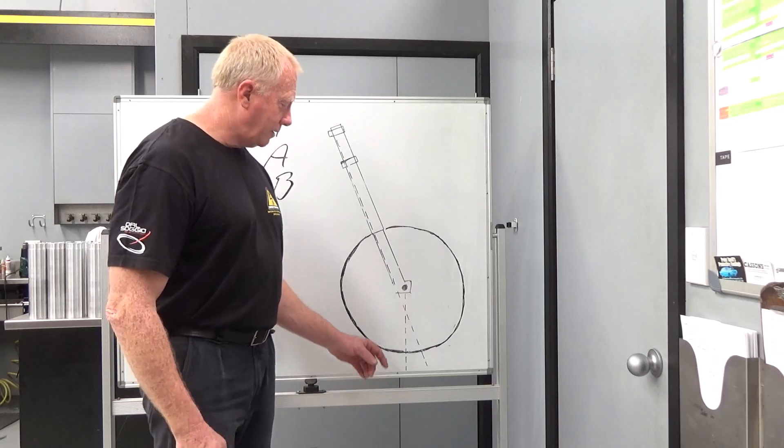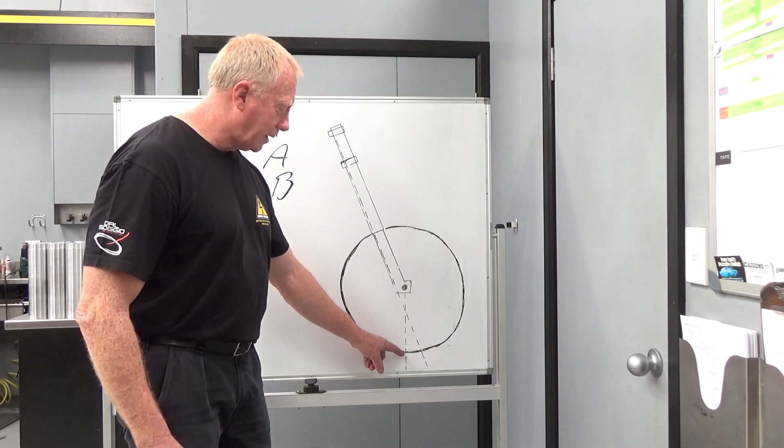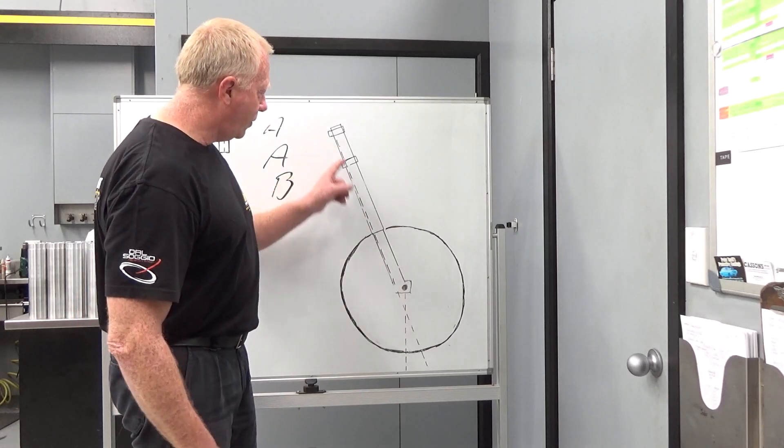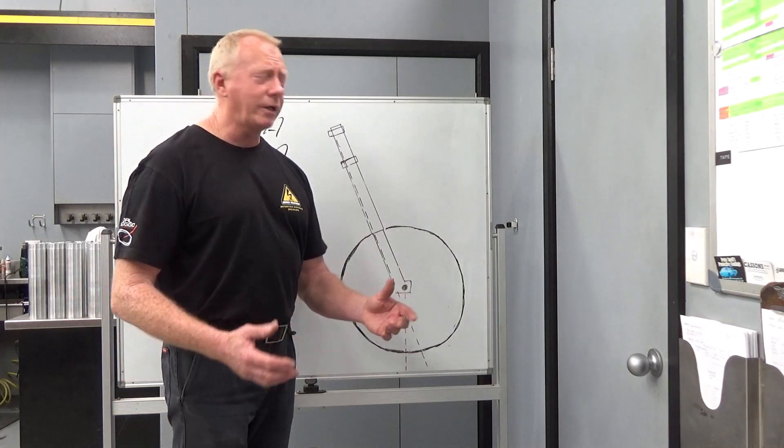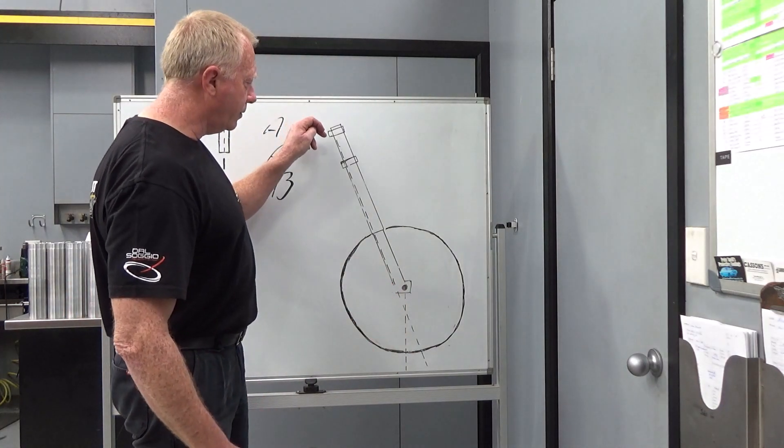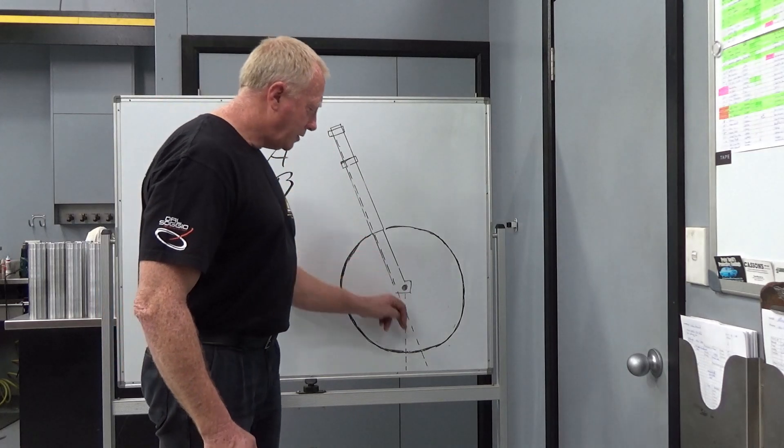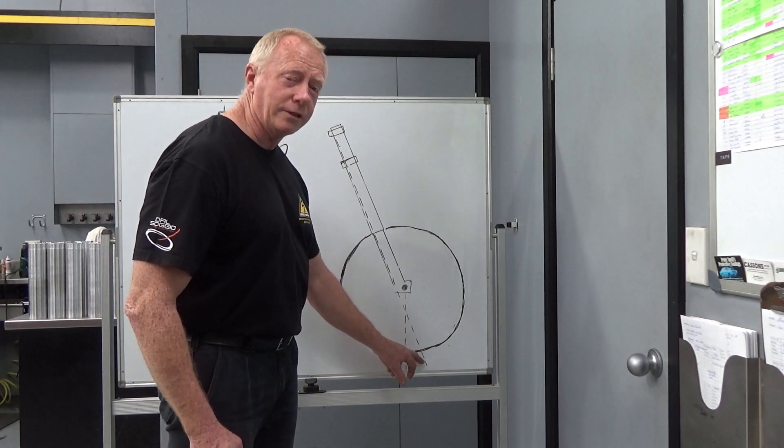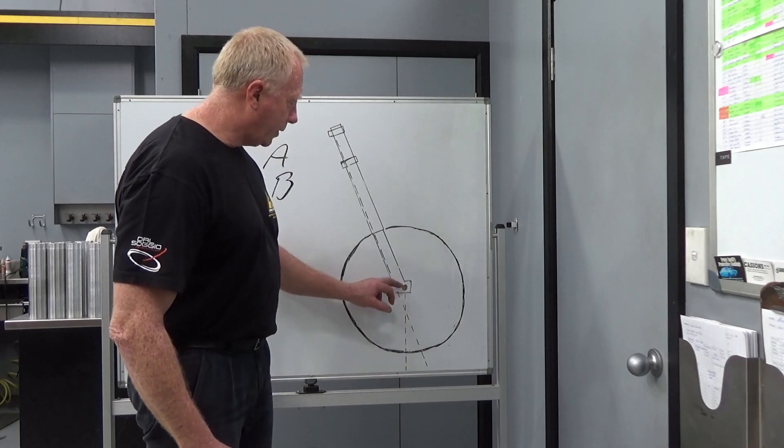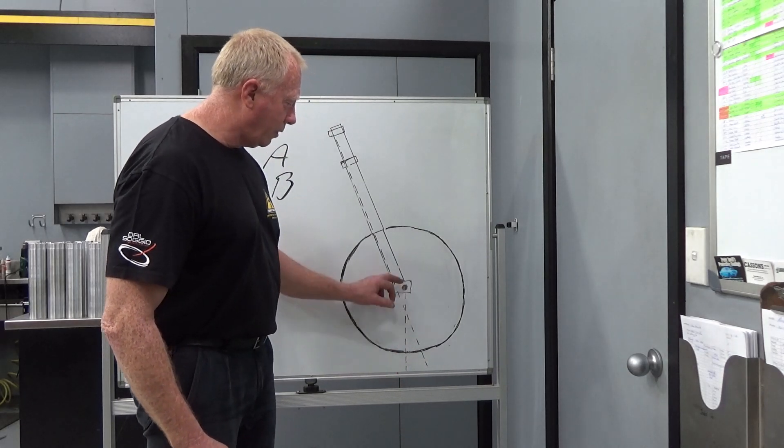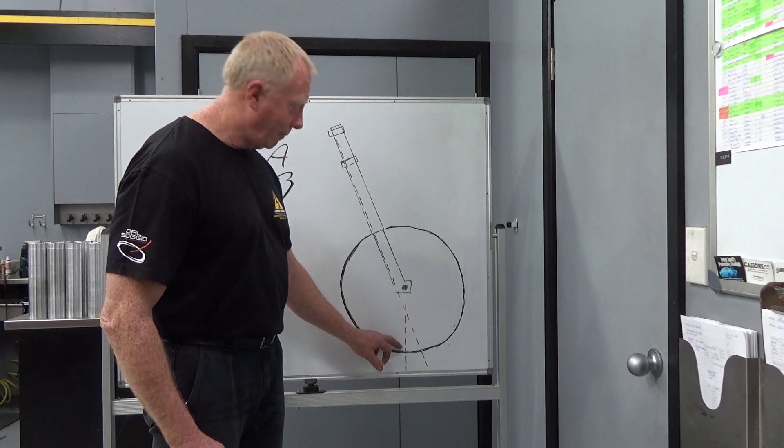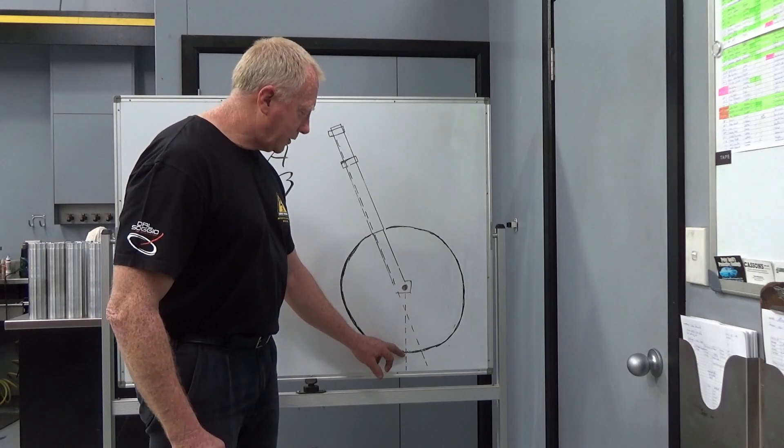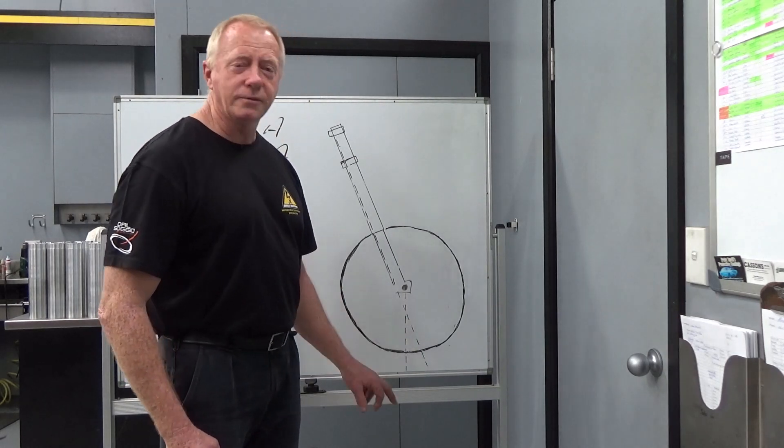Now ground trail is the difference between where the contact patch strikes the ground and where the steering axis strikes the ground as well. So to calculate that, we could project a line through the centre of the steering stem straight down, and we could actually note where that contacts the ground. And then we could simply project a line, a vertical line, straight down from the centre of the axle, and where that line touches the ground, that difference becomes our ground trail.